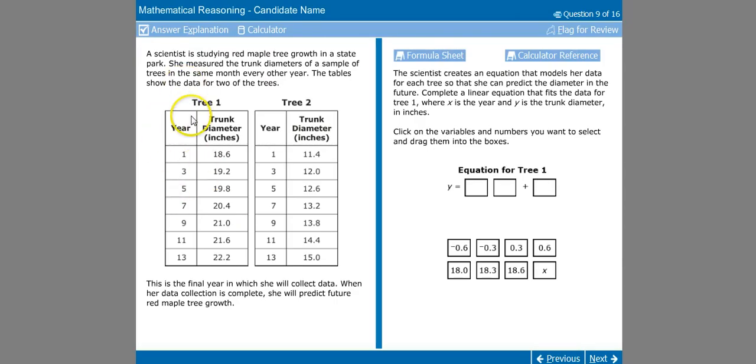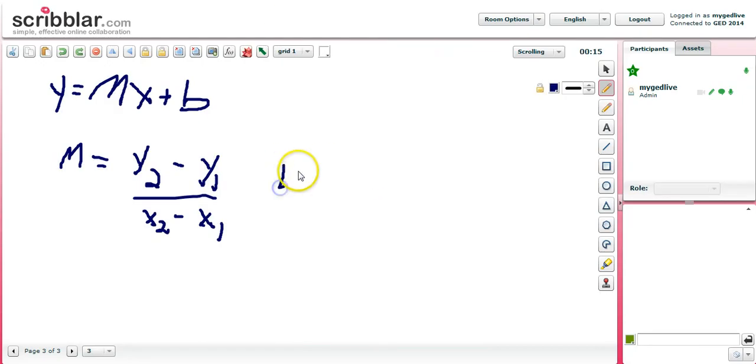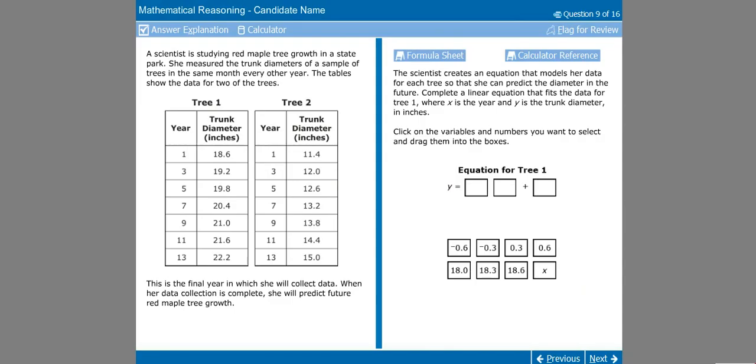Let's come back and pull some data. We know we're looking at tree one. So I'm going to take the first two points, year one and 18.6 and year three and 19.2. So 19.2 would be the second Y point, 18.6 would be the first Y point, year three would be the second X point and year one would be the first X point. Three minus one is two, and 19.2 minus 18.6 is going to give us 0.6. Then 0.6 divided by two is going to give us 0.3. So we know that the slope is going to be 0.3. Let us come back here and look at our selections. We're going to go ahead and put in 0.3 for the slope.